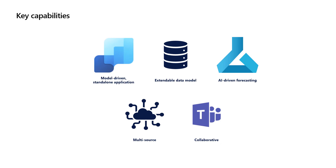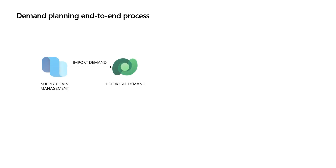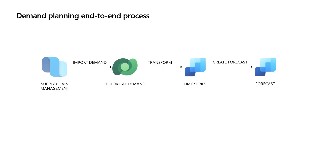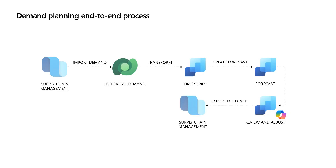Now that we understand what the application can do, let us look at the end-to-end demand planning process. It all starts by the ingestion of historical demand data from an external data source such as Dynamics 365 supply chain management. Once the data has been ingested, it must be transformed into the format used by the data model in the demand planning application. The transformation creates a historical demand data time series. Based on the imported data, we create a new forecast time series using one of the inbuilt forecasting algorithms. We now have a base forecast. It is now time for the planners to review and adjust the forecast. Once the forecast review has completed, we export the final forecast back to Dynamics 365 supply chain management.